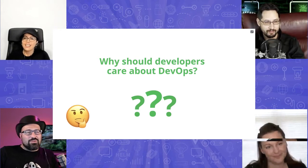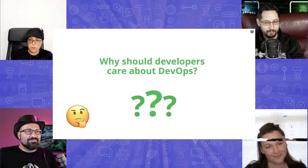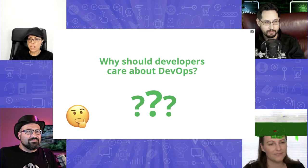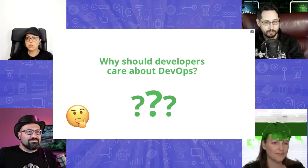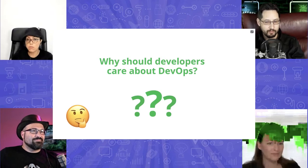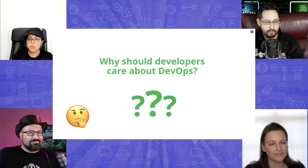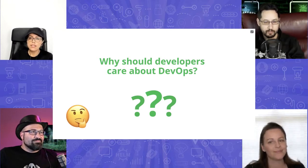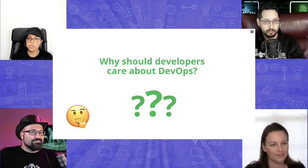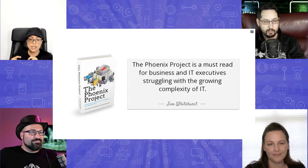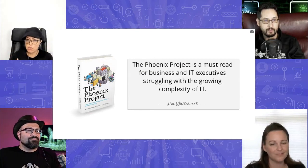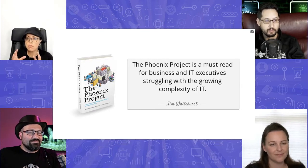Why should developers care about DevOps? First, as Steve mentioned, this set of practices — DevOps and Agile — are here to stay. If you're looking for a new job, a better-paid job, these are the skills and concepts you have to know and use. Second, there are good practices in there that will make your life easier. When this whole concept of DevOps started, probably the best book that describes the ideas behind it is the Phoenix Project. If you've started with this topic seriously, you've probably been recommended this book.